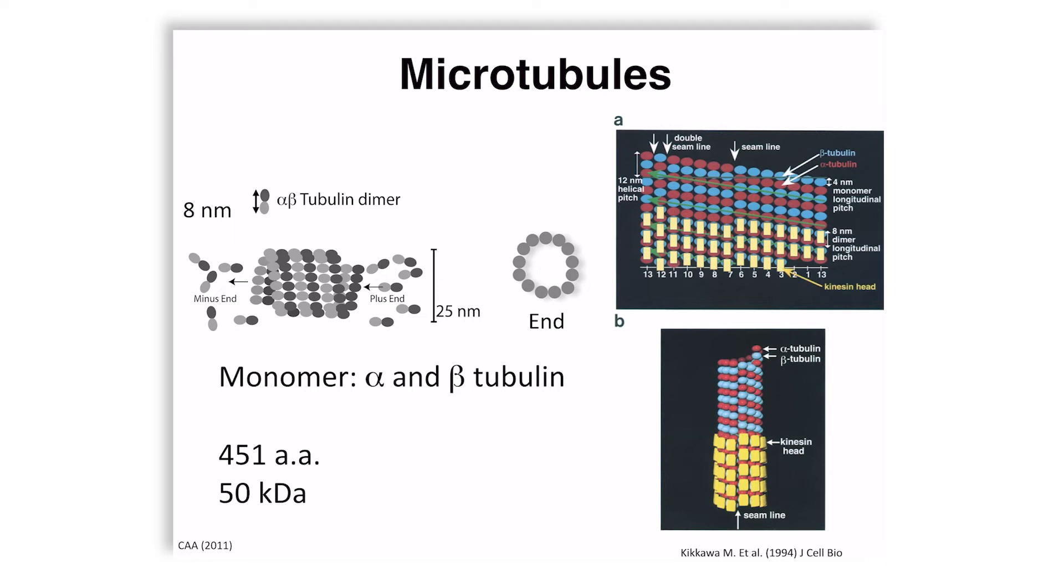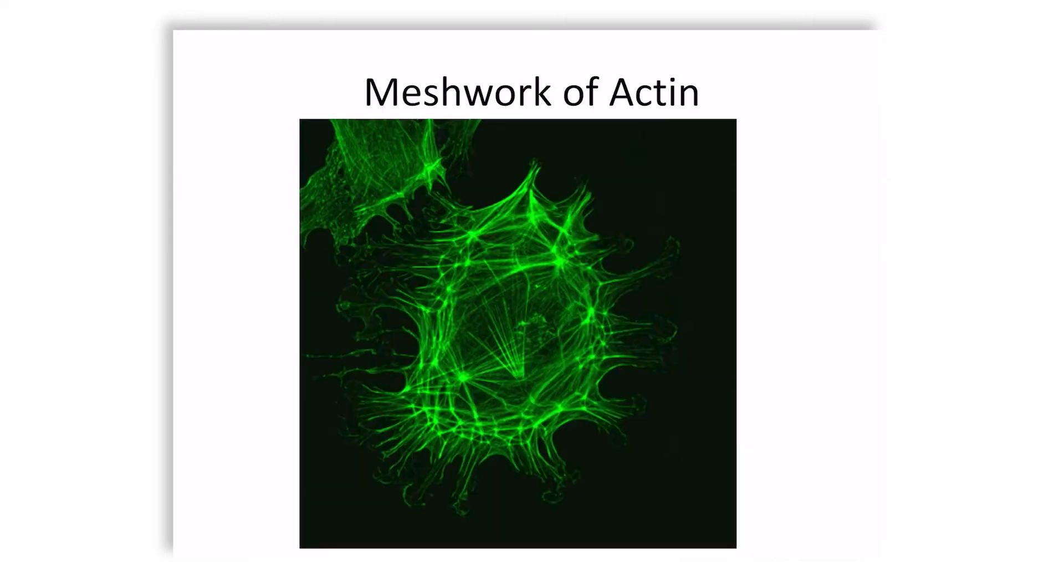These seams have been indicated to play a role in dynamic instability. There's a lot more literature on this. We will not be talking about the biochemistry or structure of it as much as we will talk about the dynamics in the coming lectures. For the moment, I only wanted to remember that this is a cylinder and it has a thickness which is determined by the alpha-beta-tubulin dimer.